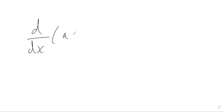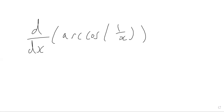Hello, so this video is going to be about differentiating the function arccos of 1 over x. Obviously we can see from here that the function can't be defined at x equal to 0, because we've got 1 over 0 inside the function. So we know that for a fact.